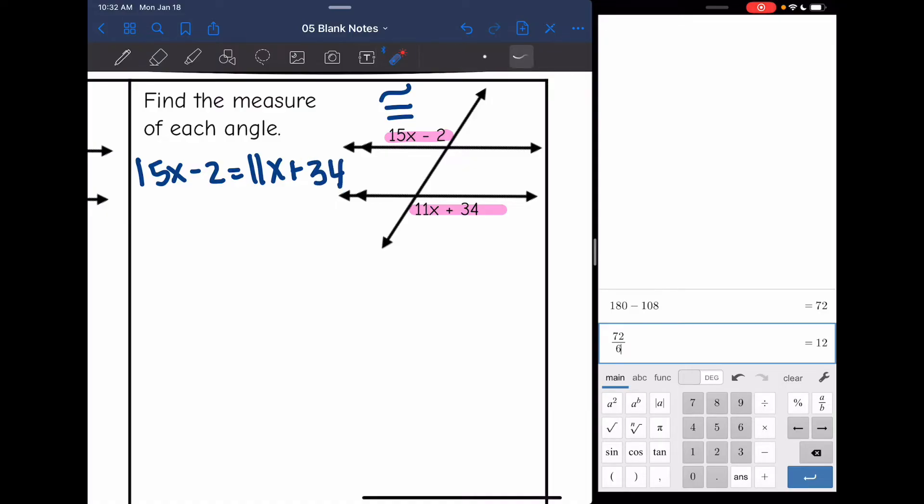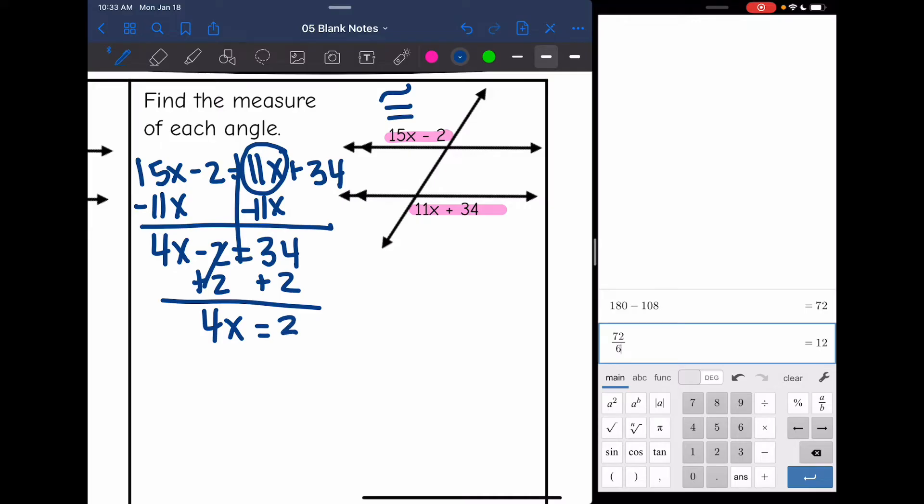So this side is simplified. I can't combine those like terms. This side is also simplified. Now I'm going to move the variables to the same side. So 11x is the smaller variable. I'm going to subtract 11x from both sides. And I get 4x minus 2 equals 34. And then my next step is to add 2 to both sides. And I get 4x equals 36. And then divide by 4. And x is 9.